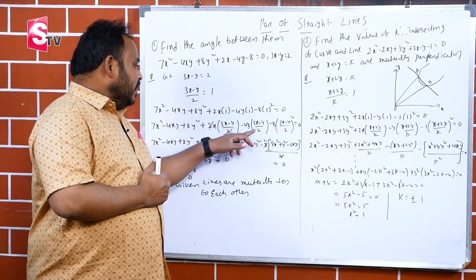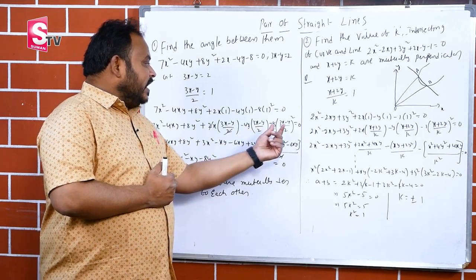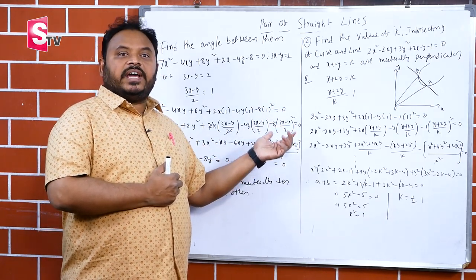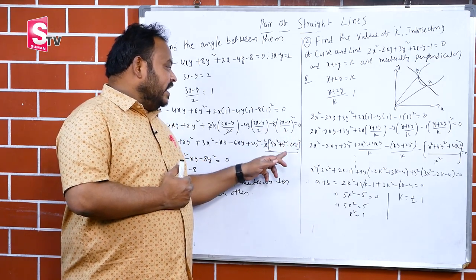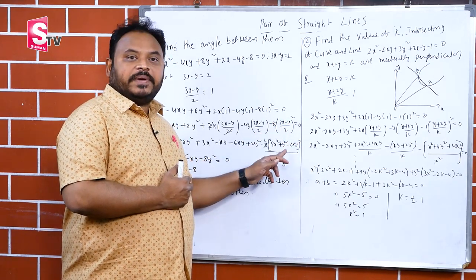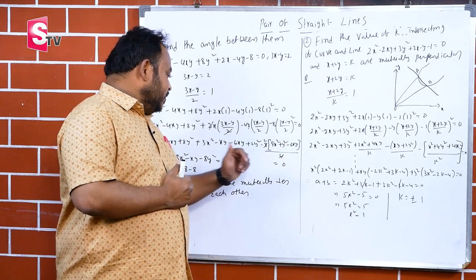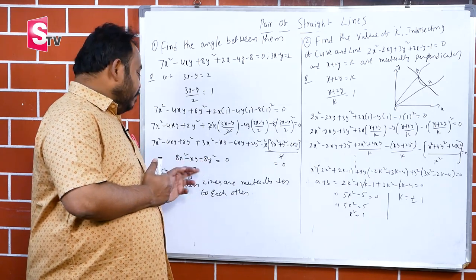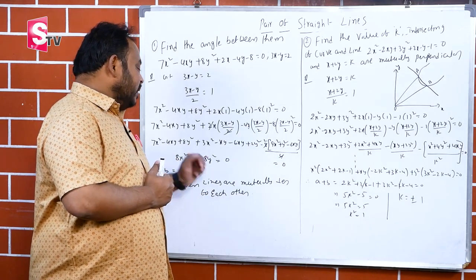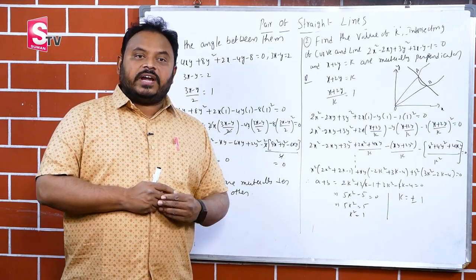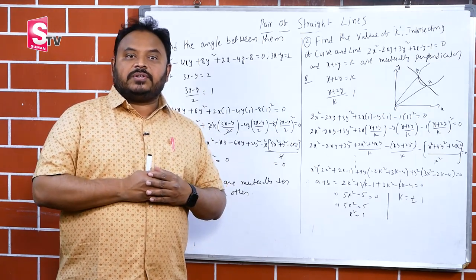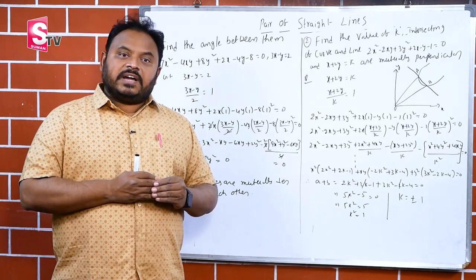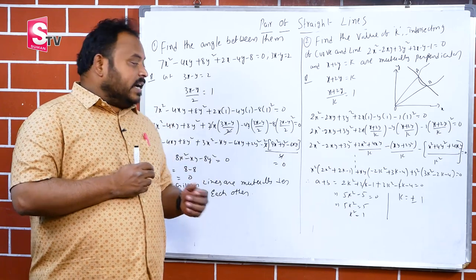After simplifying — expanding and cancelling — we get 8x² minus xy minus 8y² equals 0. This is of the form ax² plus 2hxy plus by² equals 0. Here, the formula for the angle between the lines is cos θ equals (a plus b) divided by the square root of (a minus b)² plus 4h².